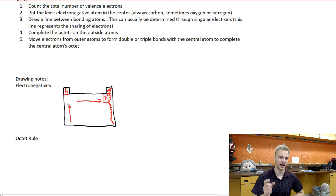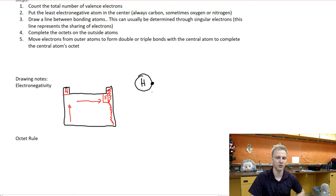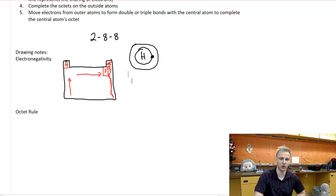The only really weird exception to this electronegativity rule is hydrogen. Hydrogen is often less electronegative than a lot of the central atoms, but because hydrogen's Bohr diagram and its Lewis structure shows that hydrogen really only wants to receive or share one other electron to complete that inner circle. Bohr diagrams follow the rule of 2-8-8, meaning in this first ring you want two electrons, in the second ring you want eight.